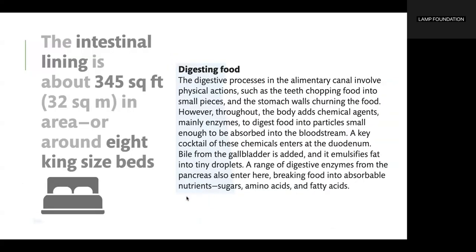The intestinal lining is about 345 square feet, or 32 square meters, in area — roughly the equivalent of around eight king-size beds.